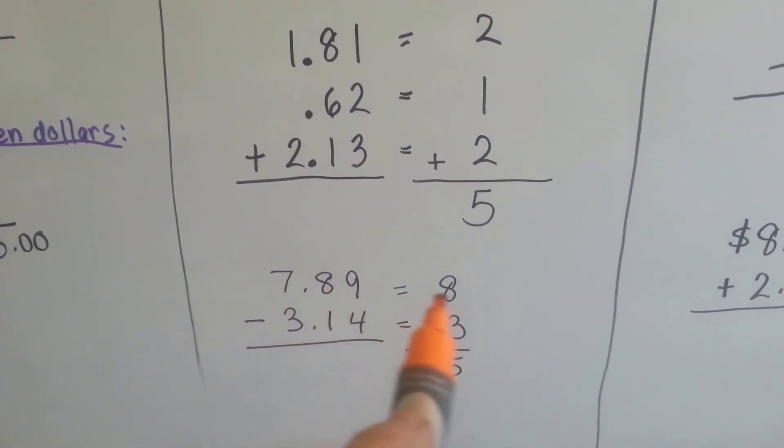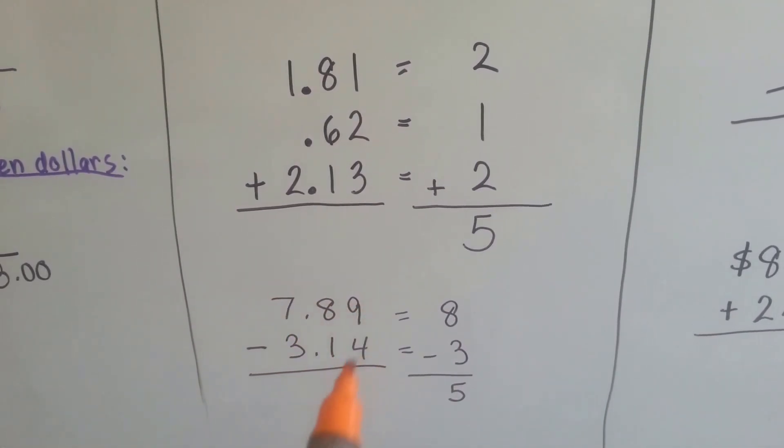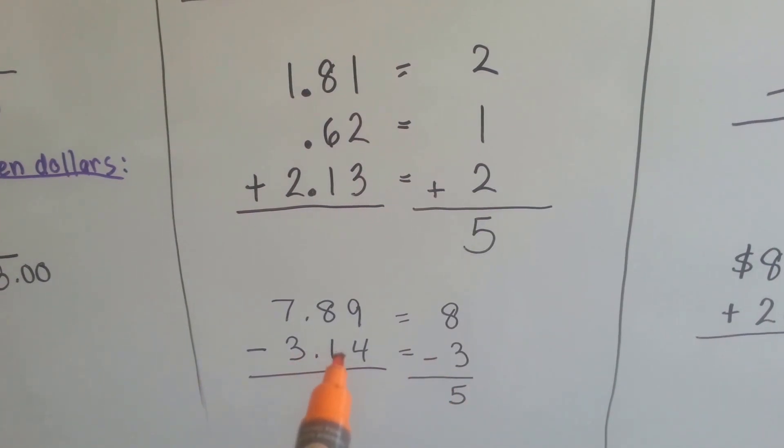7 and 89 hundredths would become 8 because the 8 told the 7 to go up to 8 and it became a 0. 3 and 14 hundredths would just become 3 because the 1 told the 3 to stay the same. And that would be 5.